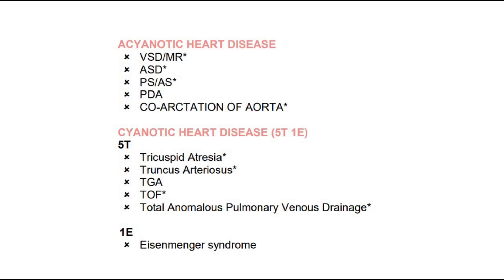This slide shows the causes of acyanotic and cyanotic heart disease. Cyanotic heart disease causes cyanosis, which is the bluish discoloration of the lips, mucous membranes, or the skin — so the baby might look bluish in color. The mnemonic for cyanotic heart disease is 5T and 1E. The 5Ts consist of tricuspid atresia, truncus arteriosus, transposition of the great arteries, tetralogy of Fallot, and total anomalous pulmonary venous drainage. The E is Eisenmenger syndrome, due to pulmonary hypertension causing a right-to-left shunt.